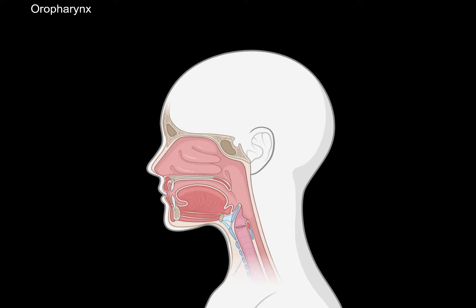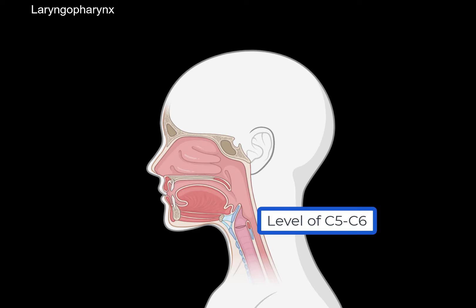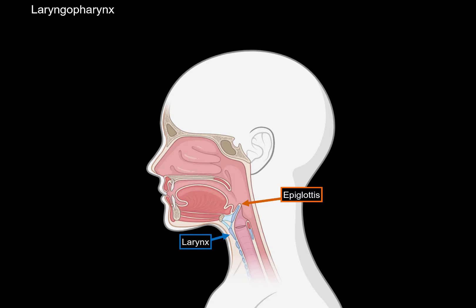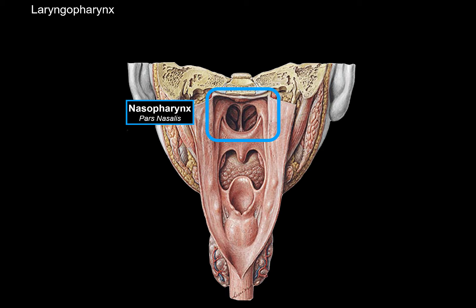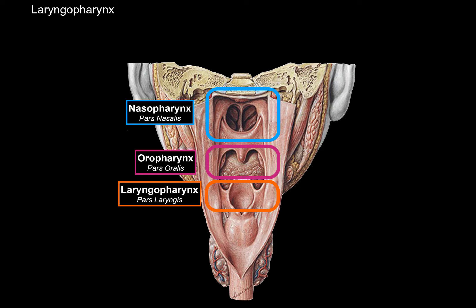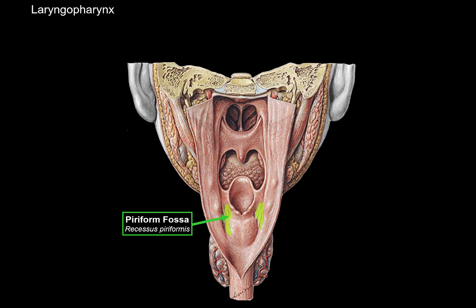Next we have the laryngopharynx, which is at the level of the fifth to sixth cervical vertebrae. The laryngopharynx will continue into the larynx. Whenever you swallow, the epiglottis will close the laryngopharynx so that the food can end up in the esophagus and then down to the stomach. These two openings are called the laryngeal inlet and the opening of the esophagus. Looking at the larynx posteriorly, we can see the nasopharynx up top, the oropharynx in the middle, and the laryngopharynx down below. There is also one more anatomical landmark called the piriform fossa — a depression on either side of the laryngopharynx.